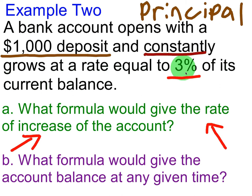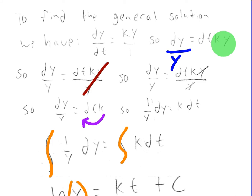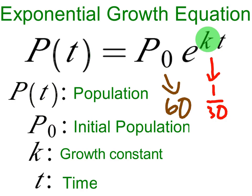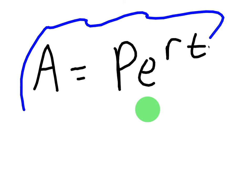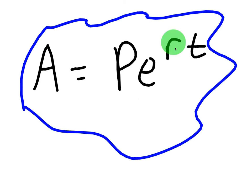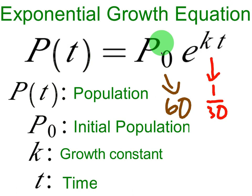If we go back and briefly look at the proof, we showed that the population is equal to the initial population times e to the kt, where k is the growth constant. This is the same as the compound interest formula: the amount in the account is equal to the principal times e to the rt, where r is basically the same as your growth constant. P is the same as the initial population — in this case, it means principal — and A is the amount in the account.